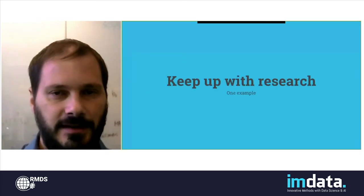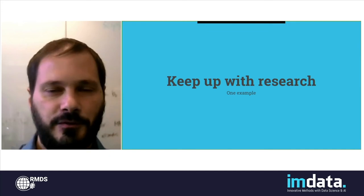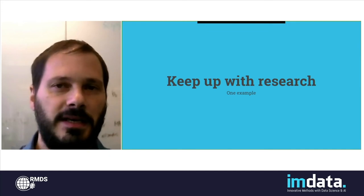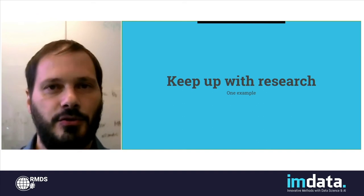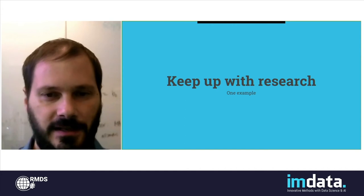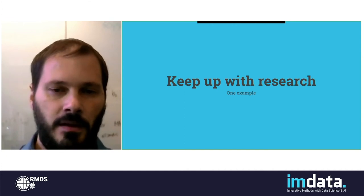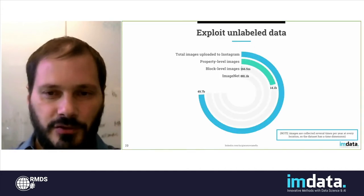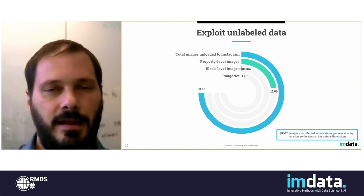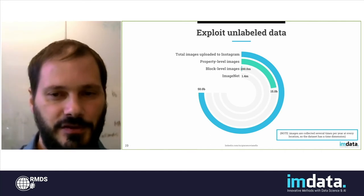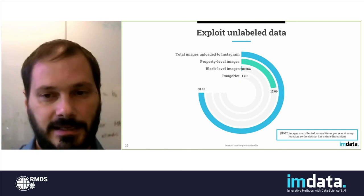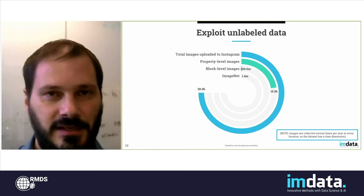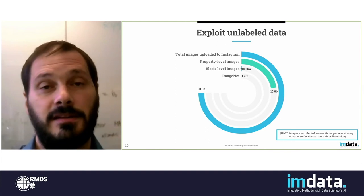Those are some techniques to deal with bias and variance. Now let's move to something a little different. At the beginning I mentioned that it's very important to keep up with research, and now I'm going to talk about one recent example of how this can be beneficial. One characteristic of geospatial data is that you have a lot of unlabeled data available, because your vendors — the ones that provide aerial images — collect data continuously, several times a year for every location in the US as well as in the world.